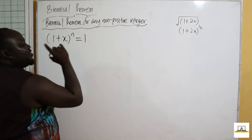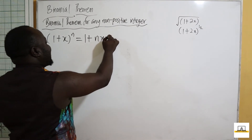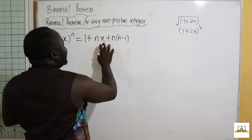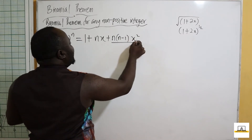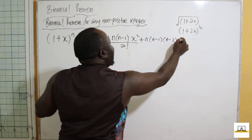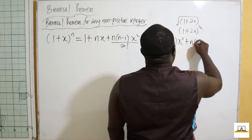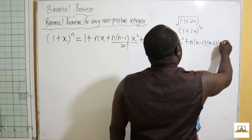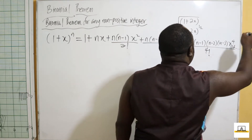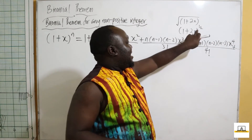The first term is always one, plus nx, plus n(n−1)x² over two factorial, plus n(n−1)(n−2)x³ over three factorial, plus n(n−1)(n−2)(n−3)x⁴ over four factorial, and so on to infinity.